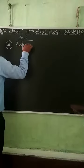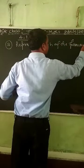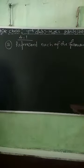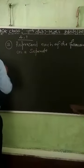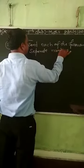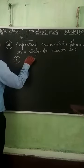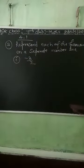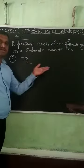The question says represent each of the following on a separate number line. All numbers will be shown on a number line. The first number given is minus 3 by 2. We need to represent minus 3 by 2 on the number line. To do the representation, first convert it from fraction form to decimal form.